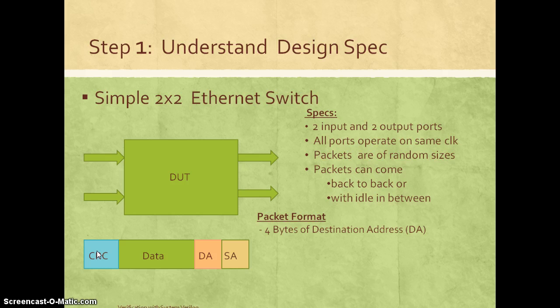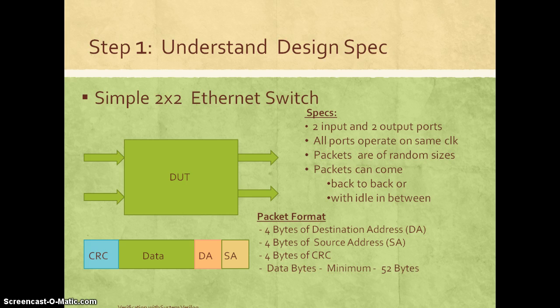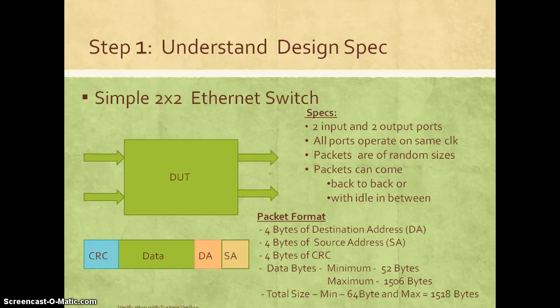The specification will tell you exactly there's four bytes of destination address, four bytes of source address, four bytes of CRC, and they also tell you what is the data byte. So in this case, picking up with an example of ethernet, it's a minimum 52 byte data and a maximum of 1518 bytes. That's what a design specification might look like. There might be more details about exactly what the clock frequency is, how wide your input bus and output bus are, what the actual signals and signal level protocols are, etc.